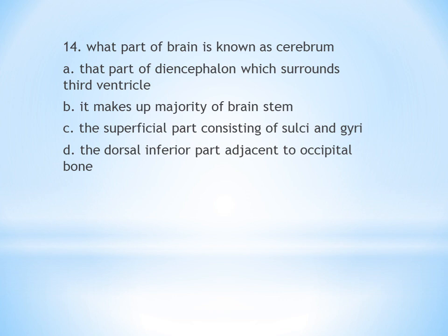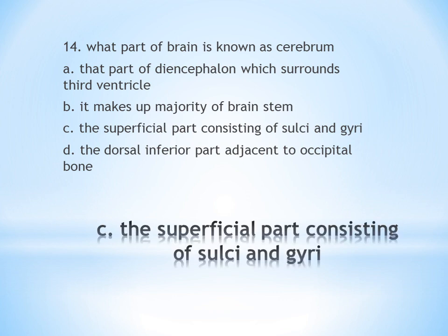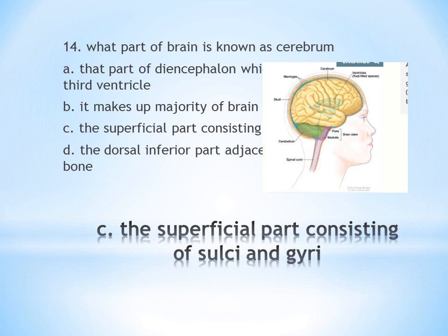Fourteenth question: What part of the brain is known as the cerebrum? A. The part of diencephalon which surrounds the third ventricle, B. It makes up majority of brainstem, C. The superficial part consisting of sulci and gyri, D. The dorsal inferior part adjacent to occipital bone. Answer is C — the cerebrum is the superficial part consisting of sulci and gyri.